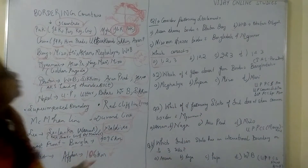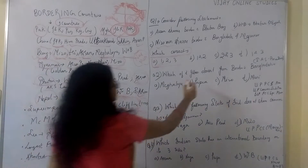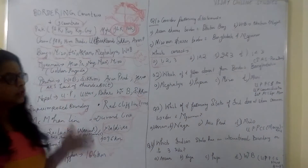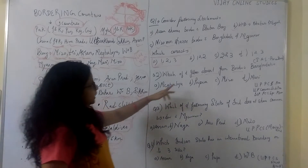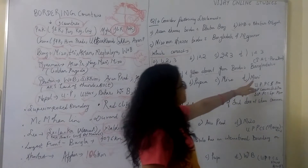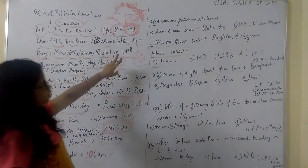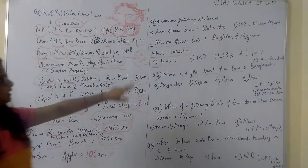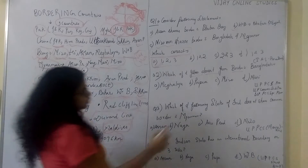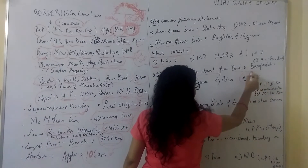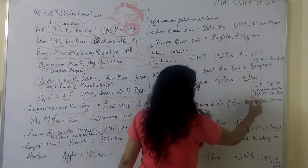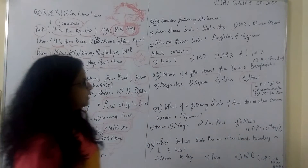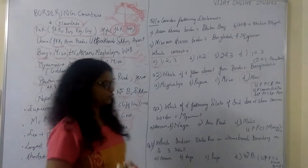Next question: Which state of India does not share a border with Bangladesh? The options are Meghalaya, Tripura, Mizoram, and Manipur. Two northeast states do not share a border with Bangladesh — that is Manipur and Nagaland. So the correct option is D, Manipur. This question has been asked in UPPCS prelims, UPPCS lower sub-PCS examination, and UPPCS special exams.